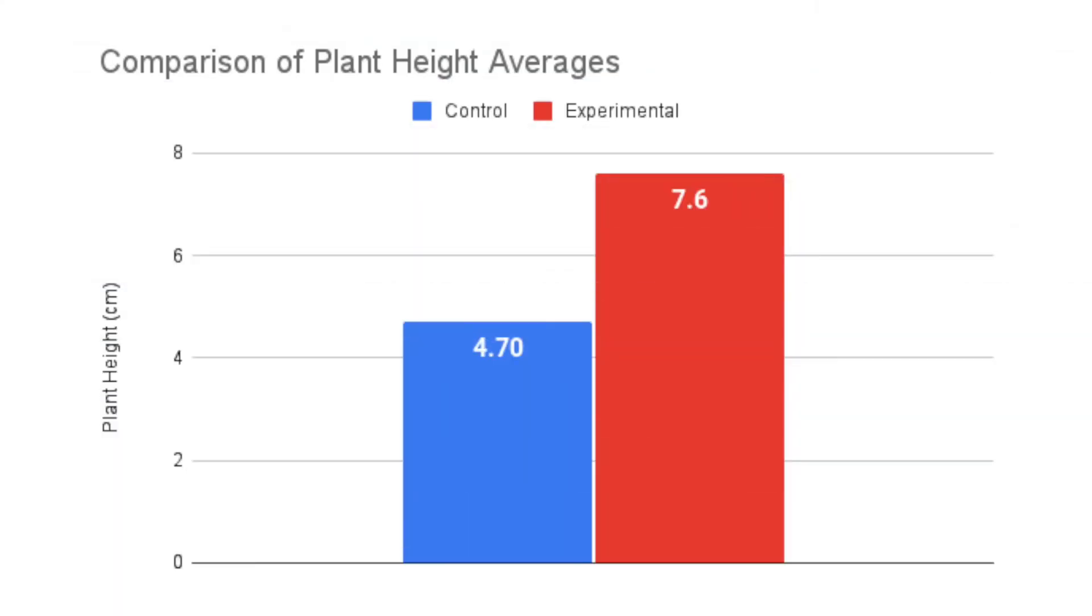To make a nice comparison of our data, we should make one more graph. A bar graph will compare our averages nicely. The average height of our experimental group was significantly larger than the average height of the control group.